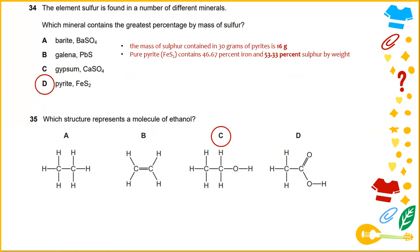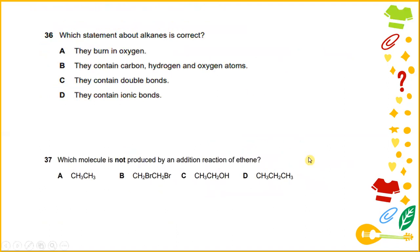Which structure represents a molecule of ethanol? Ethanol is a 2-carbon alcohol and its molecular formula is CH3CH2OH. Which statement about alkanes is correct? Methane CH4 and alkanes burn in oxygen to produce carbon dioxide and water. They burn in oxygen.